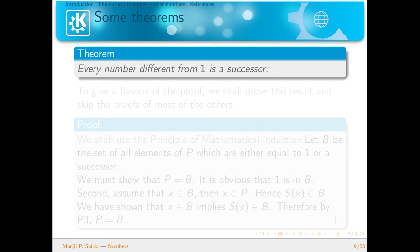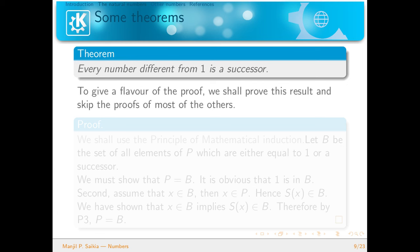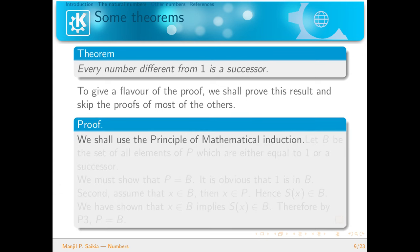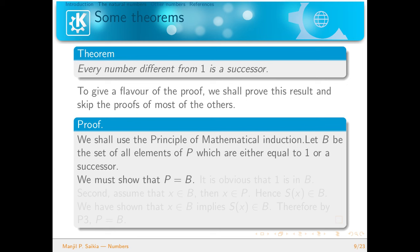We have some theorems. First: every number different from 1 is a successor — except the distinguished element 1, every element in a Peano system is the successor of some other element. To give a flavor of the proof: let B be the set of all elements of P which are either equal to 1 or are successors. We must show that P equals B. If we show this, then there will be no element which is not the successor of any other element in P.